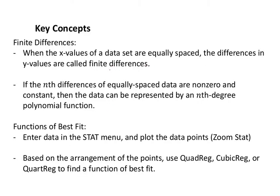Whenever we find the level of difference where the difference remains constant, that tells us the degree of the function that we're working with. If the nth differences of equally spaced data are non-zero and constant, then the data can be represented by an nth degree polynomial function. That's great information, but how do we actually get to that best fit function? Well, we're going to enter the data in the stat menu just like we did before.